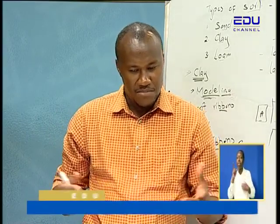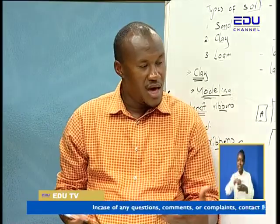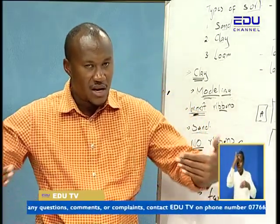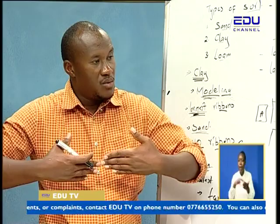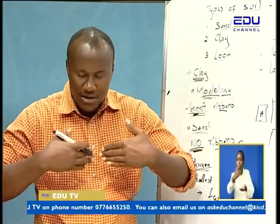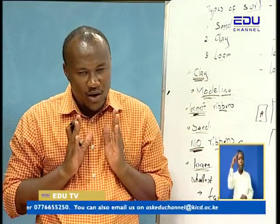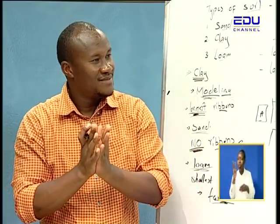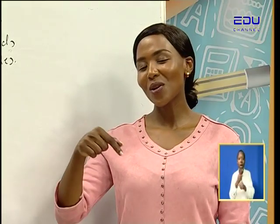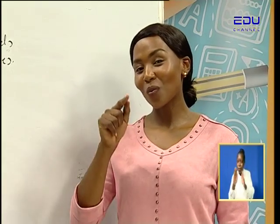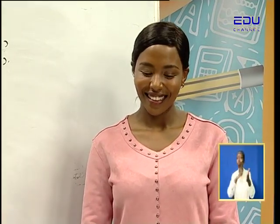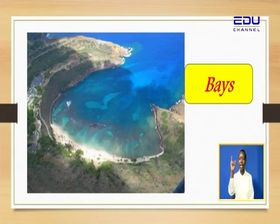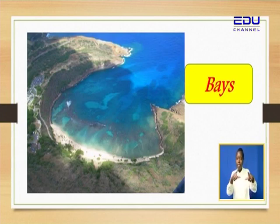We have a bay there — a bay is formed due to erosion. Remember, a bay is an enclosed water body by land. And we gave an assignment to go and find out what we call the land that gets enclosed by water — go to our comment section and tell us. What do we call land enclosed by a water body?